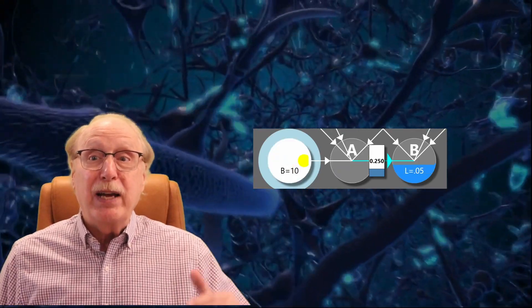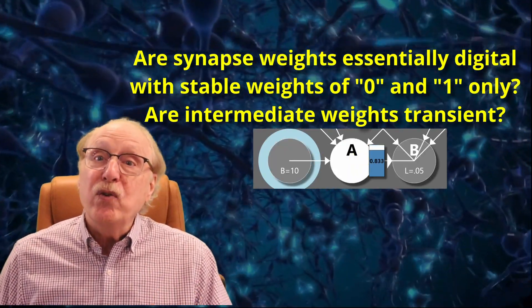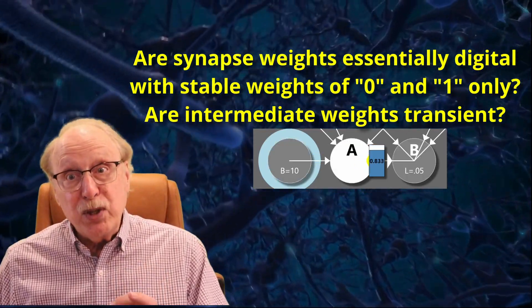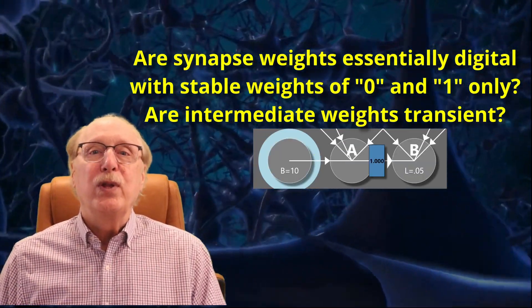At the high end, any firing will cause the synapse to migrate to its maximum, so all useful weights must be lower. At the low end, the weight will be too small for the synapse to have any influence on the firing of B. In between, there aren't very many discernible weights. In the last video, I mentioned that neurons are essentially digital. Perhaps synapses are essentially digital too. What do you think?